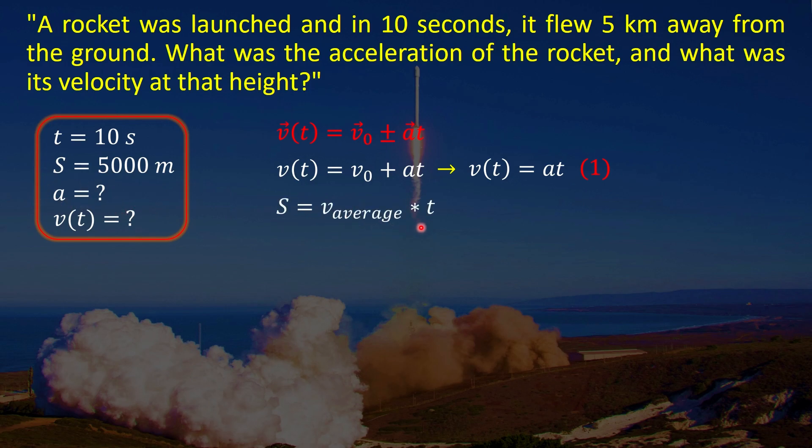So we can use this well-known formula. Distance equals average speed multiplied by time. Since the rocket doesn't have a constant speed, because it's constantly increasing, we have to use the average speed. So let's call this equation number 2.